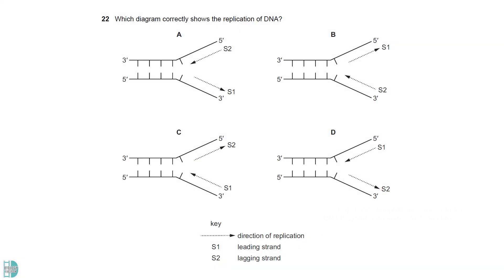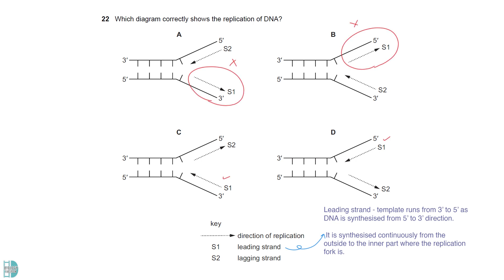The leading strand occurs at the template that runs from 3' to 5' as DNA is synthesized from 5' to 3' direction. It is synthesized continuously from the outside to the inner part where the replication fork is. A and B are wrong because the leading strands are synthesized from the inner part. D is wrong because it shows the synthesis of new strands from the 3' to 5' direction.